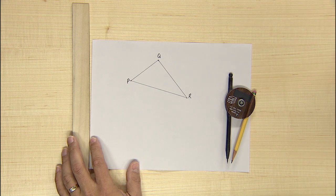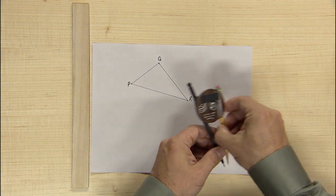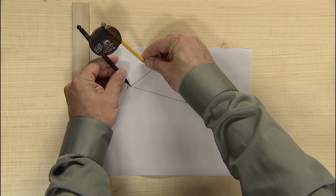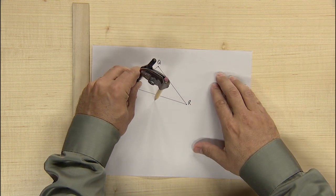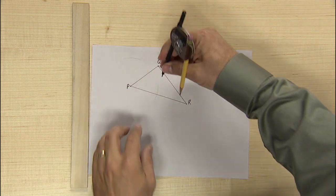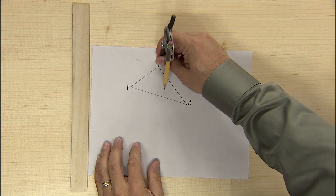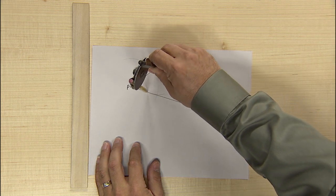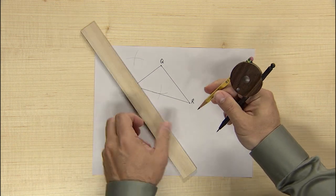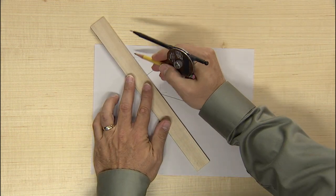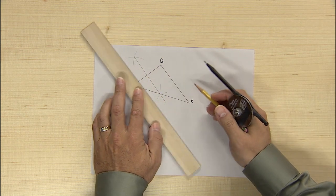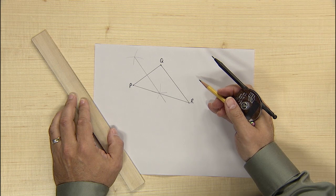To make the first perpendicular bisector of PQ, I'm going to take my compass, put the stylus on P, make an arc here and an arc here, then put the stylus on Q and make arcs of the same radius. And there they are. I go ahead and connect them with a line or segment, and I now have one perpendicular bisector of one side.